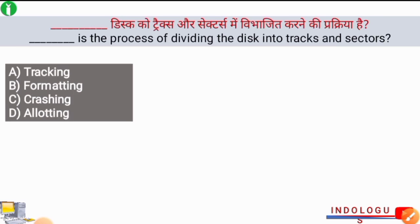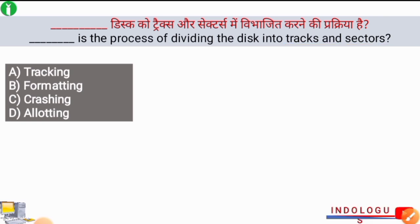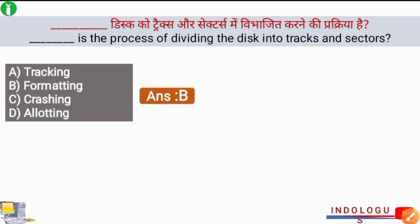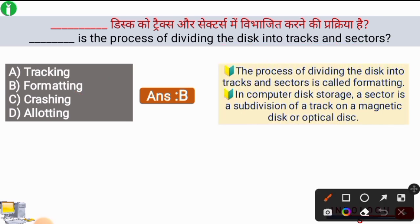Next question: What is the process of dividing the disk into tracks and sectors called? The right answer is option B, formatting. Formatting is the process of dividing the disk into tracks and sectors. In computer disk storage, a sector is a subdivision of a track on a magnetic disk or optical disk.